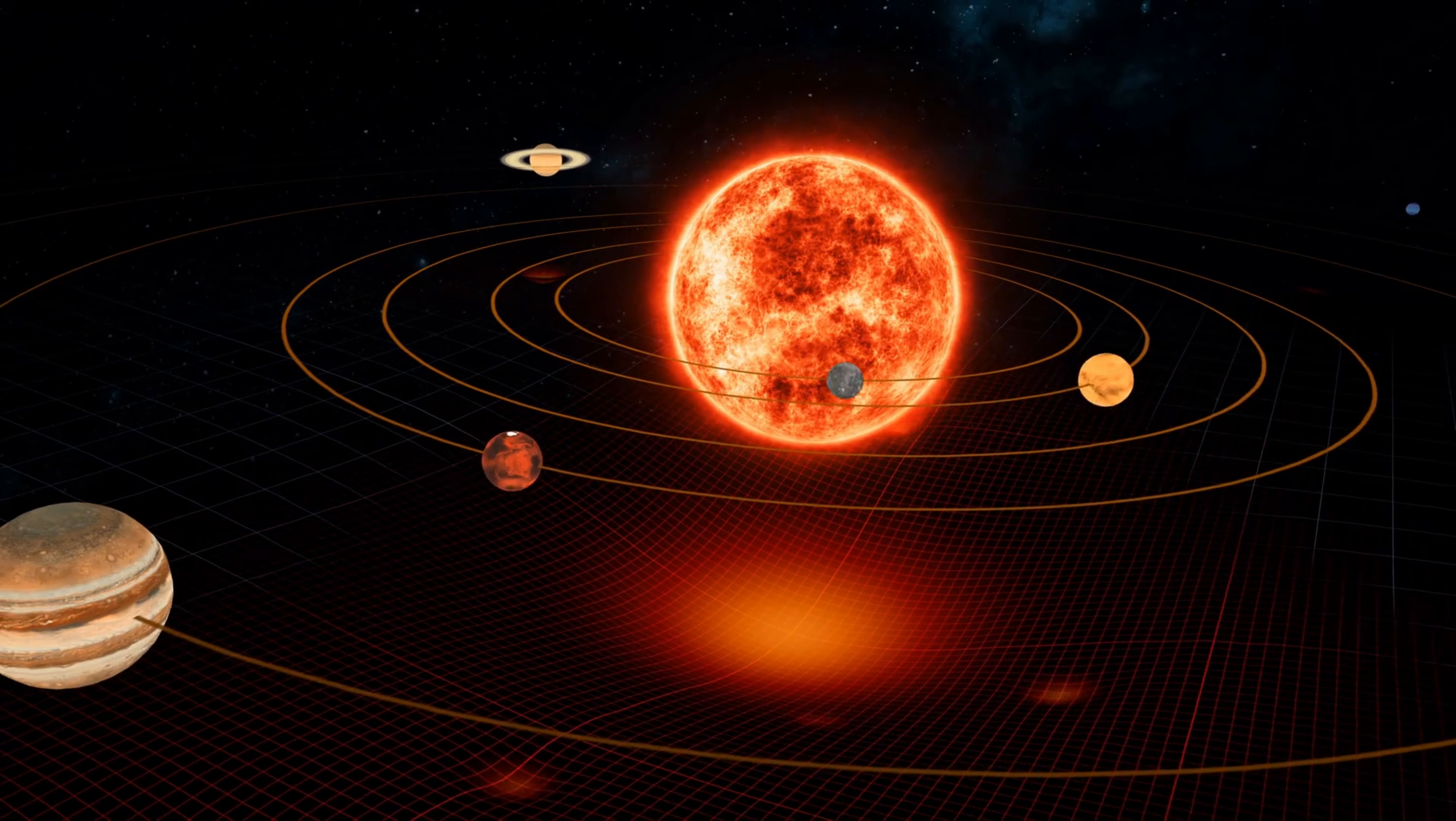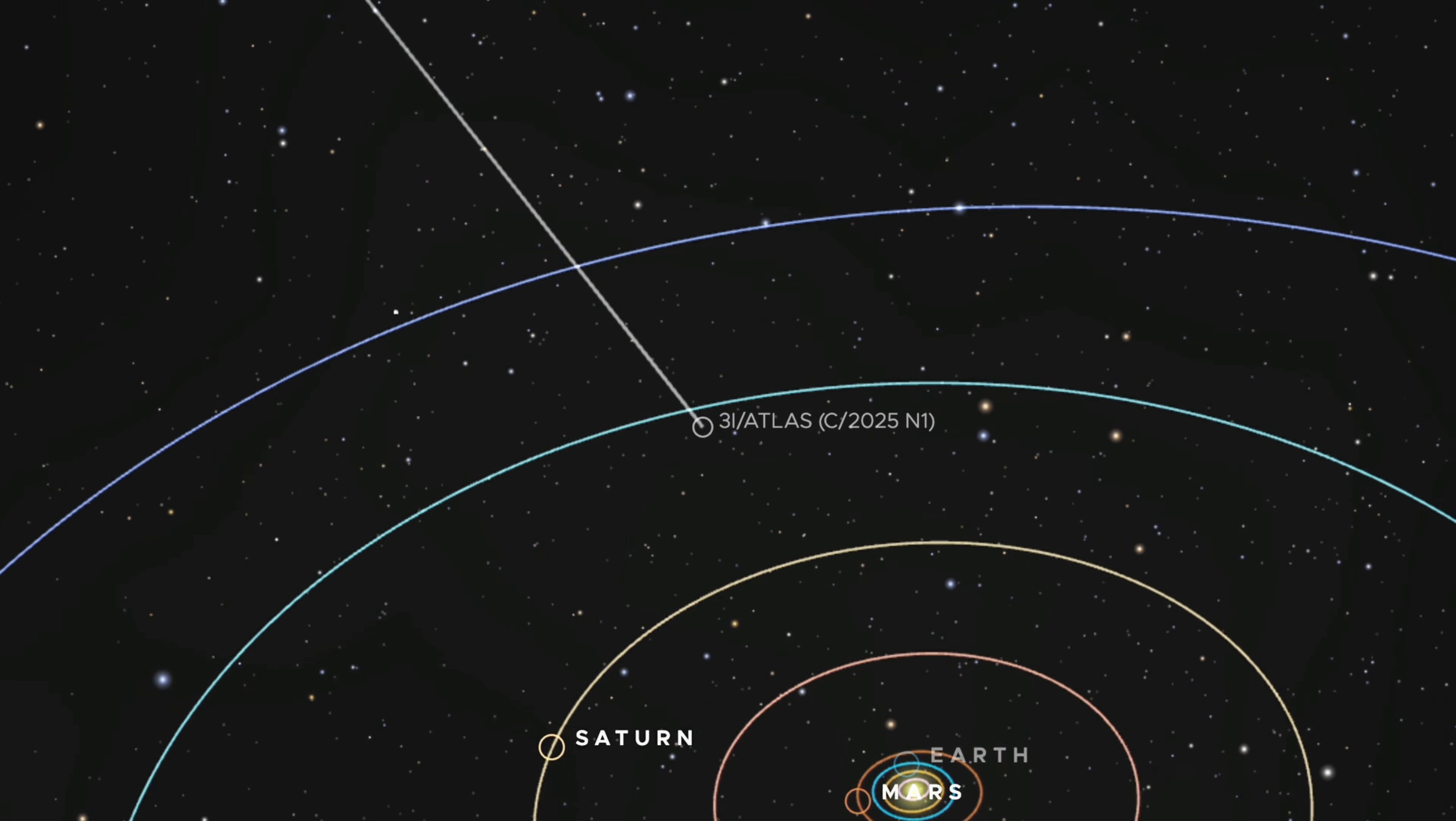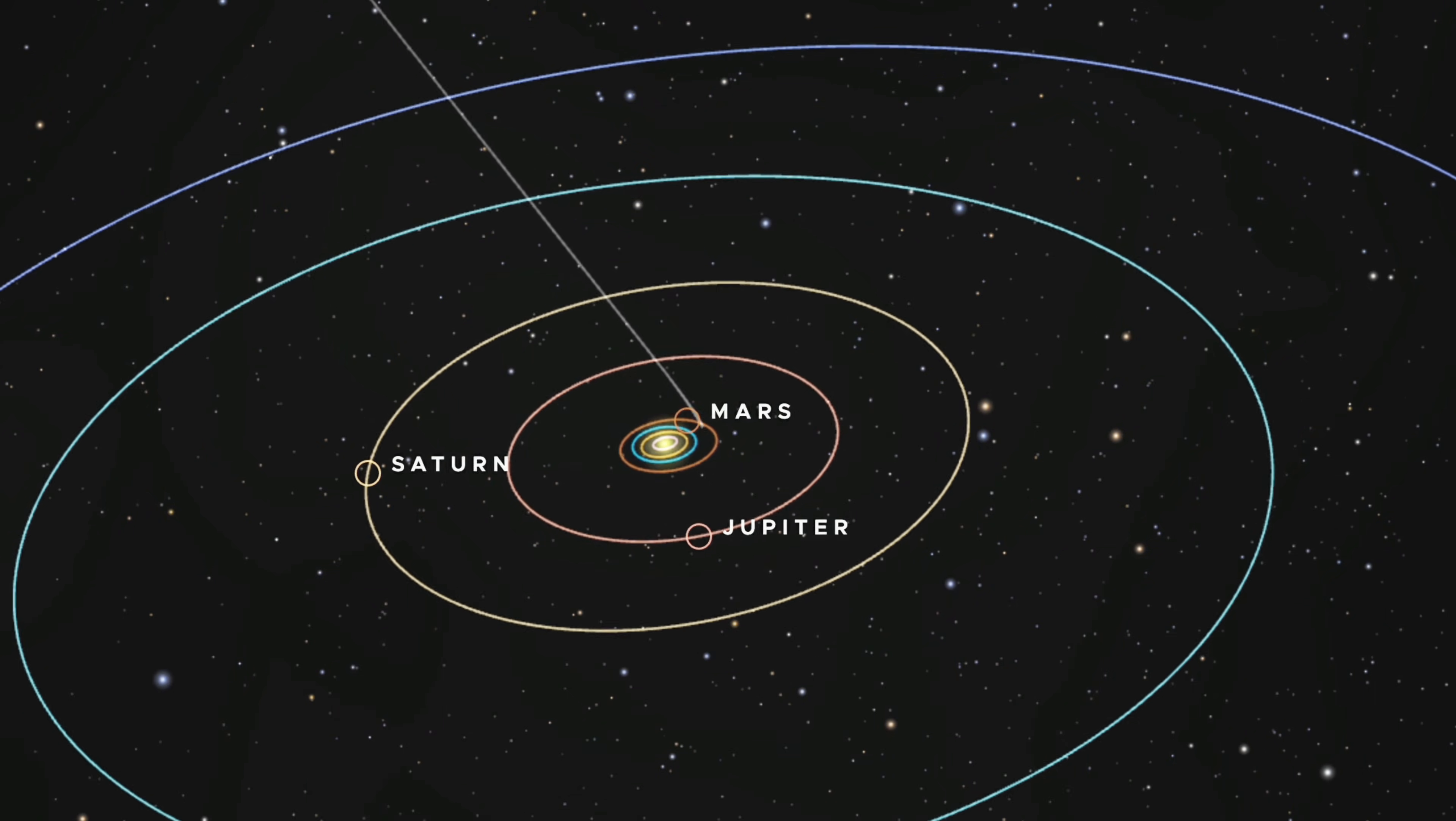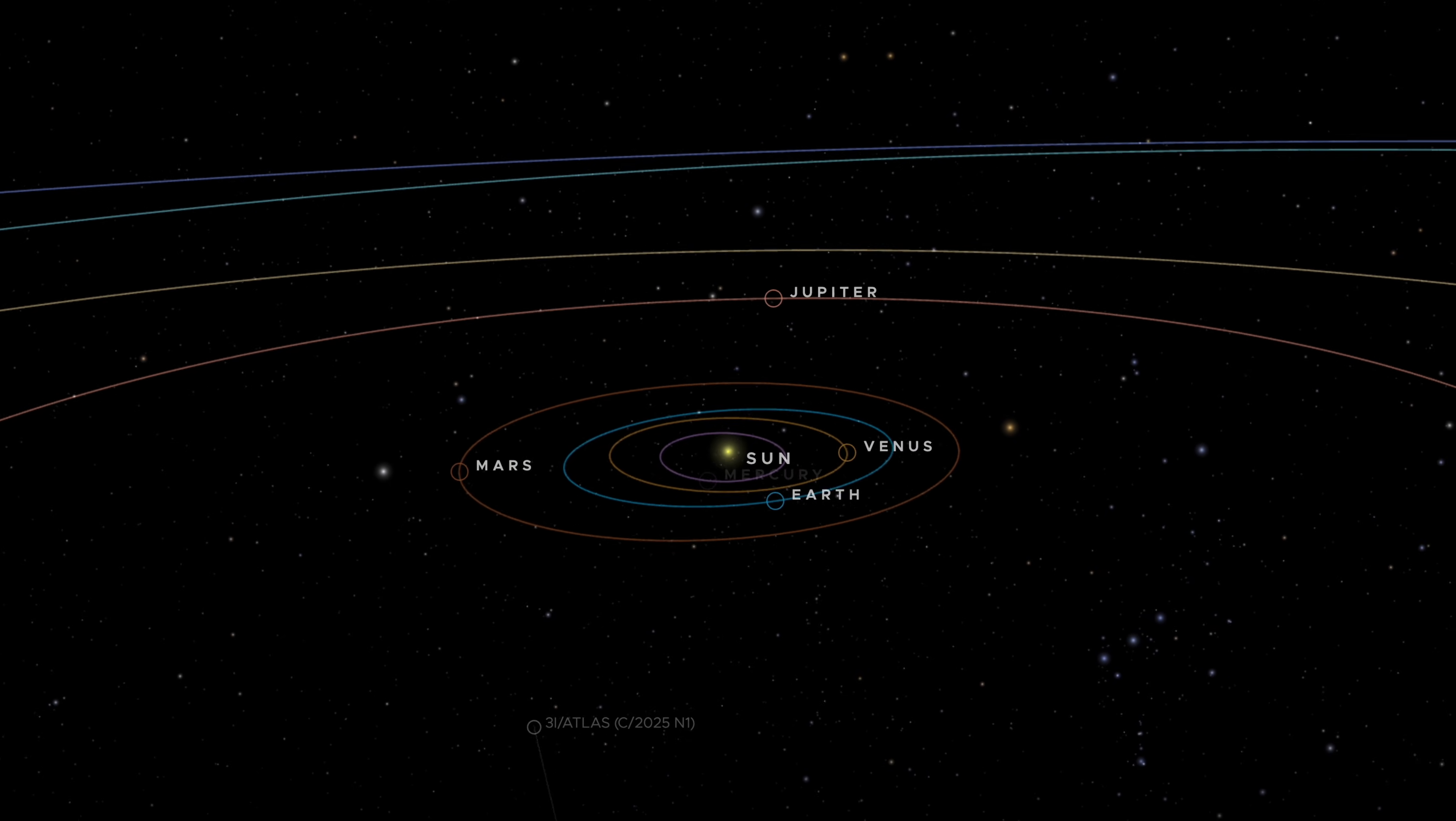The gravitational effects of the sun on 3I Atlas also raised eyebrows. As the object passed through the solar system, it was deflected by the sun's gravity as expected. However, the degree of deflection was 16 degrees, a number that stood out as unusually precise. While gravitational interactions between objects are common, the fact that the object's trajectory was altered by such a specific amount of degrees is remarkable.